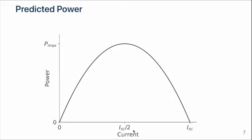When we plot this function, we see that where the current is half of the short circuit current, the parabola is at its peak and the power is at its maximum.